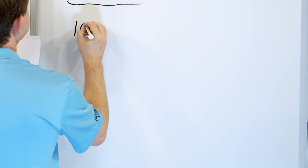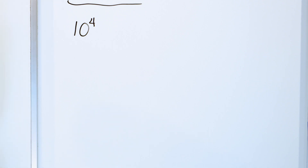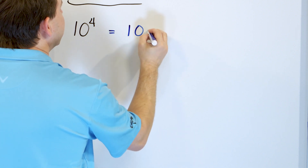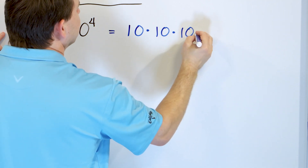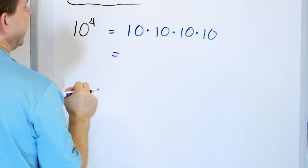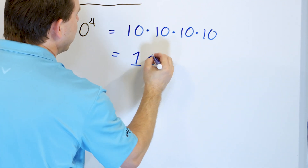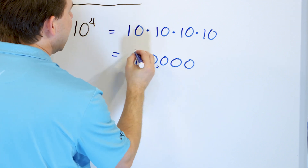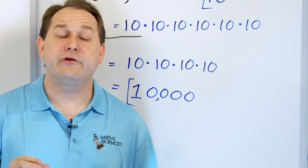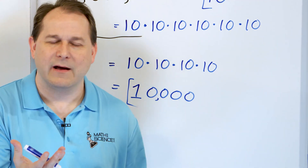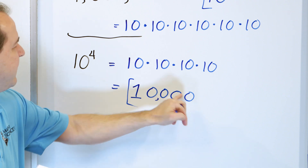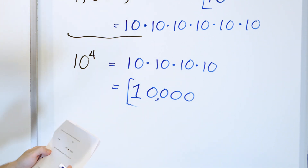Problem six: take 10 to the power of 4 and write it as a standard number. 10^4 means 10 multiplied by 10 multiplied by 10 multiplied by 10 — four of them. You can look at this and say it's a 1 followed by 1, 2, 3, 4 zeros. Put a comma in and the answer is 10,000. When it's 10 raised to an exponent, you can immediately write it as a 1 with that many zeros.